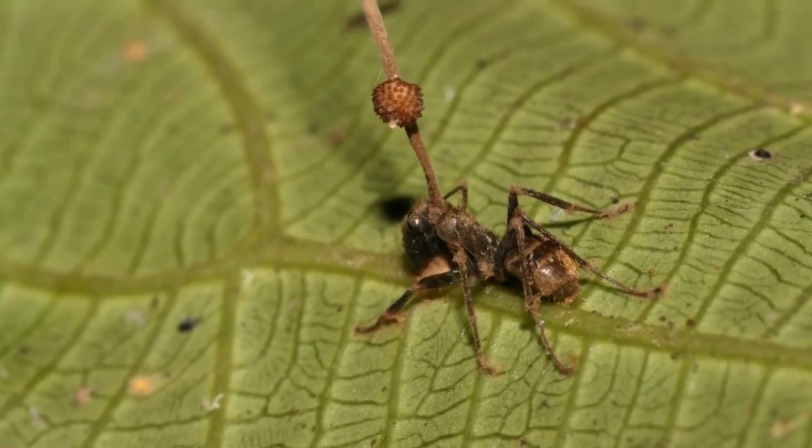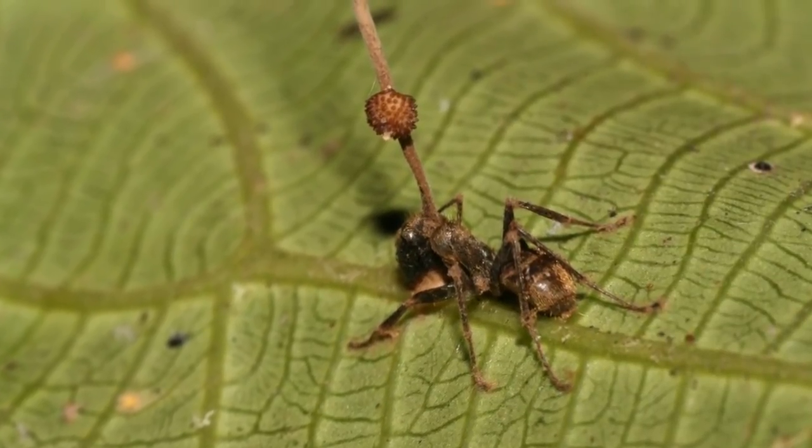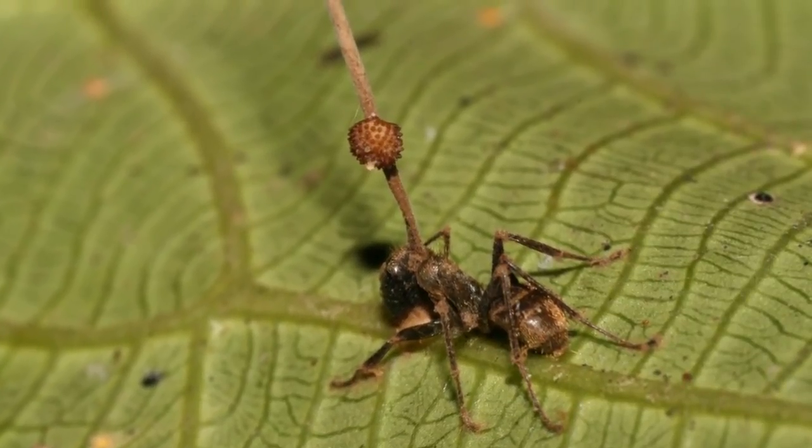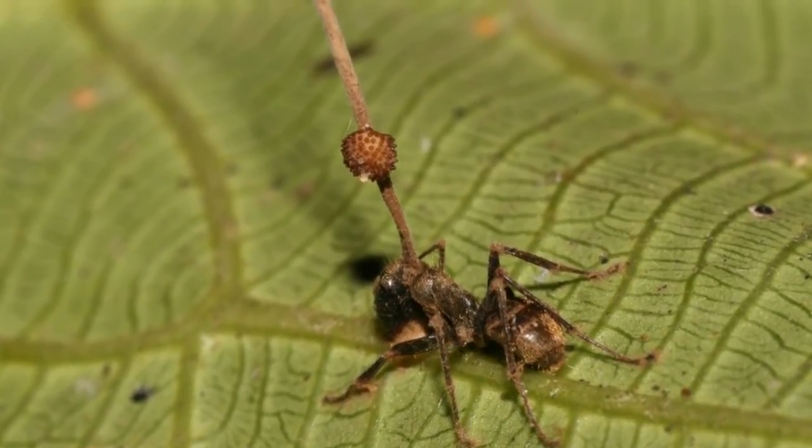The final step, the chomp of death. The chomp of death is when the fungus forces the ant to take one last bite into a leaf, locking its jaw and waiting for it to die of starvation.